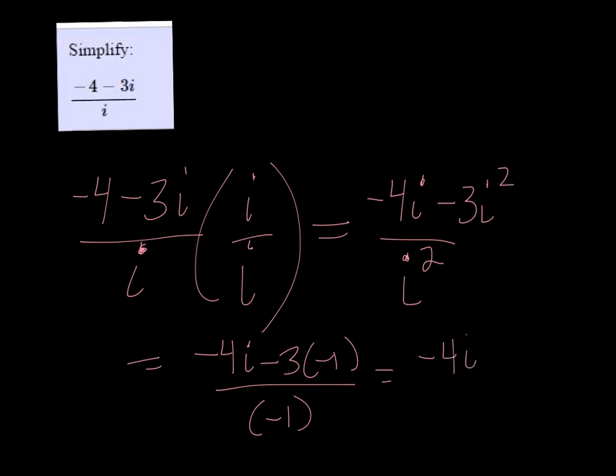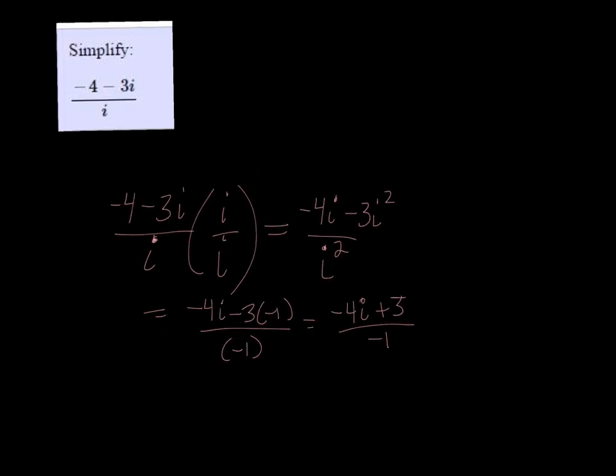Simplify it a little bit, so we get negative 4i plus 3 all over negative 1, and if we divided everybody by negative 1, then we would get positive 4i minus 3.